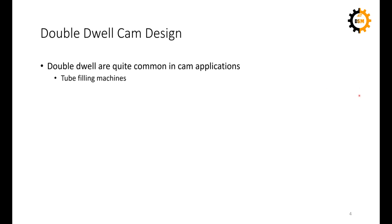Applications requiring double dwell — where the follower must stop twice — are very common. For example, consider tube filling machines in which a nozzle or injector puts material inside tubes, like toothpaste filling machines. In such a machine, tubes move on a conveyor, and above them toward the nozzle there is a cam follower mechanism following a double dwell, which moves downward to insert paste and fill the tube.